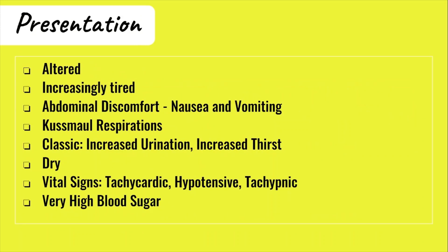Your patient will most likely present with abdominal discomfort, often feeling nauseous as a result of their metabolic acidosis. They'll report being increasingly tired as their cells haven't been able to use glucose for energy. Of course, they can present with classic symptoms of increased urination and increased thirst, which are a result of osmotic diuresis in the body attempting to compensate by drinking more water. They will be very dehydrated.